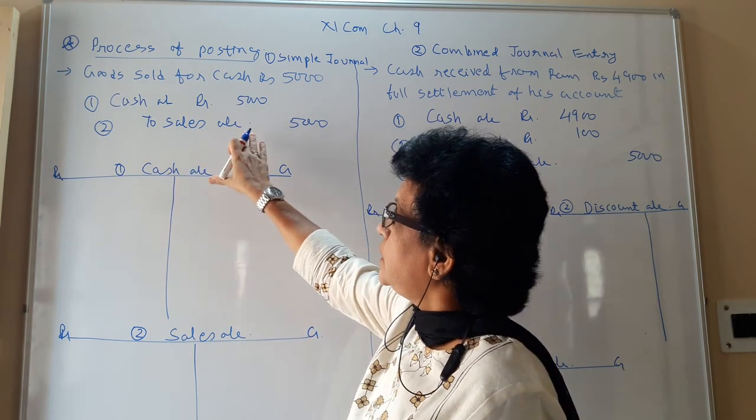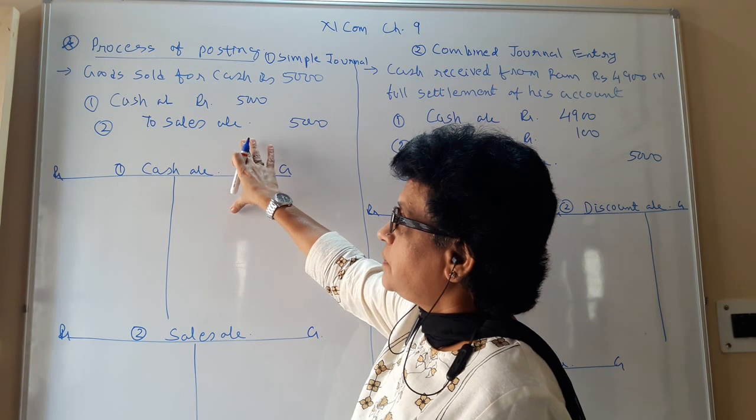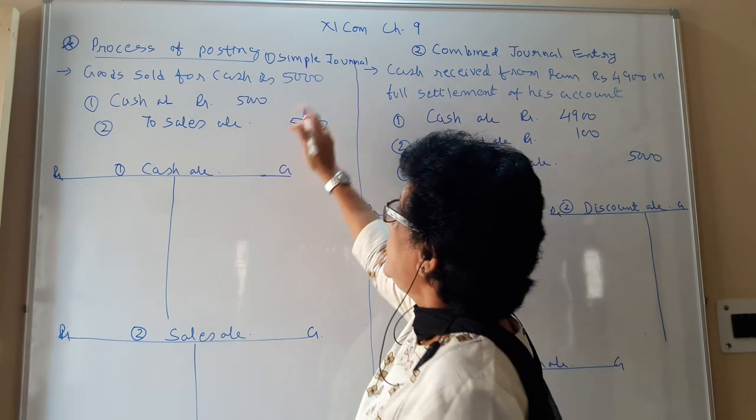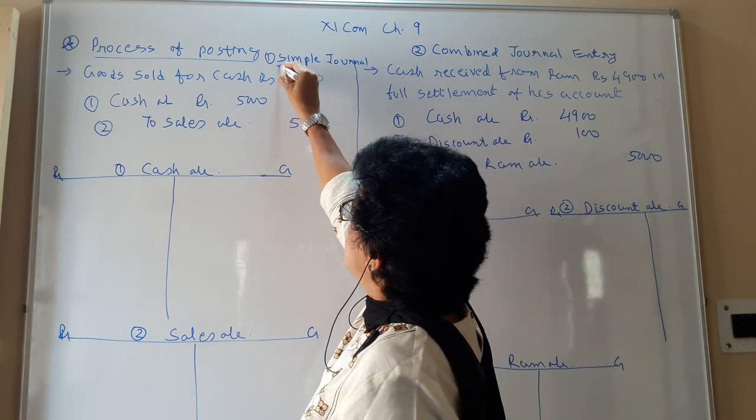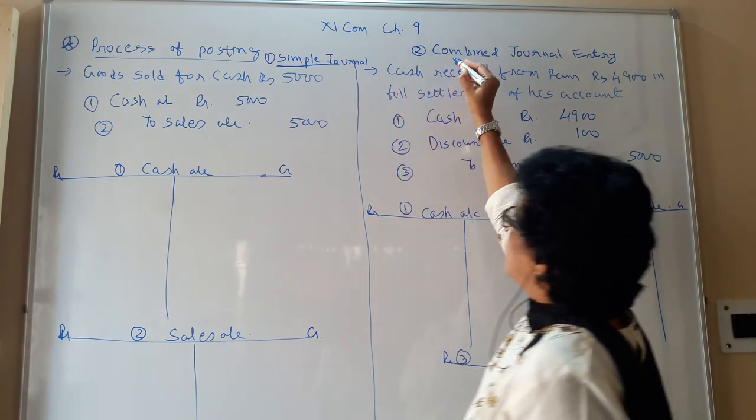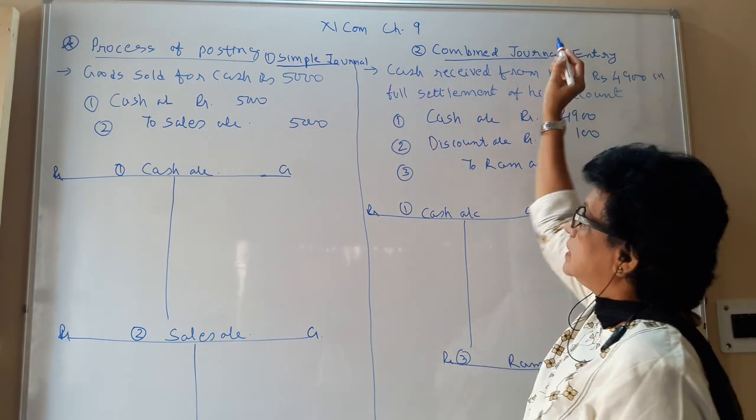Today we are going to see ledger posting process from the journal entry. One is a simple journal entry and second is a combined journal entry.